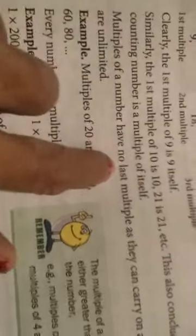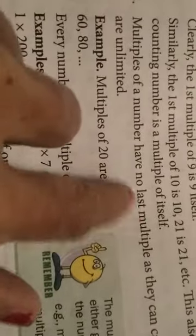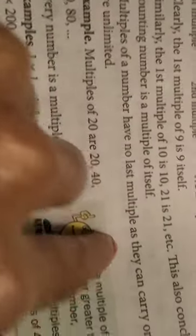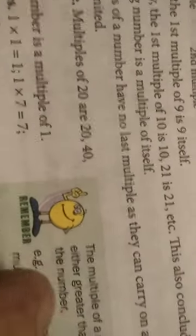Multiples of a number have no last multiples, as they can carry on and on. They are unlimited. Multiples of a number may go on.